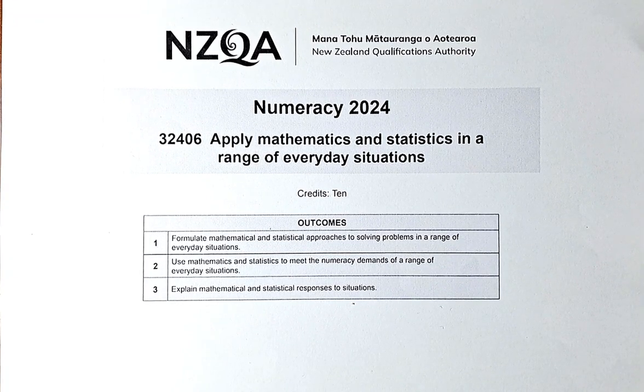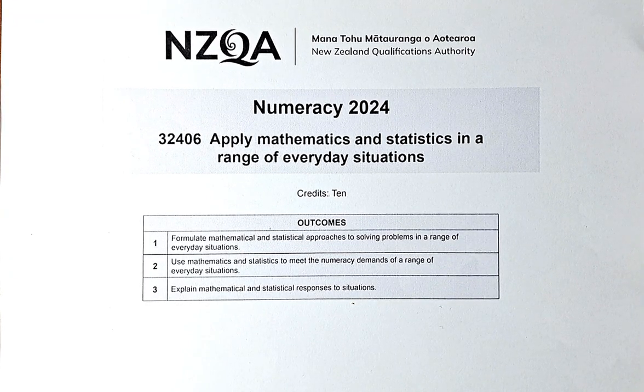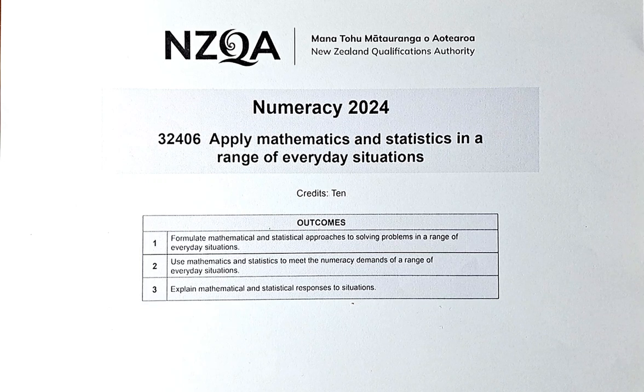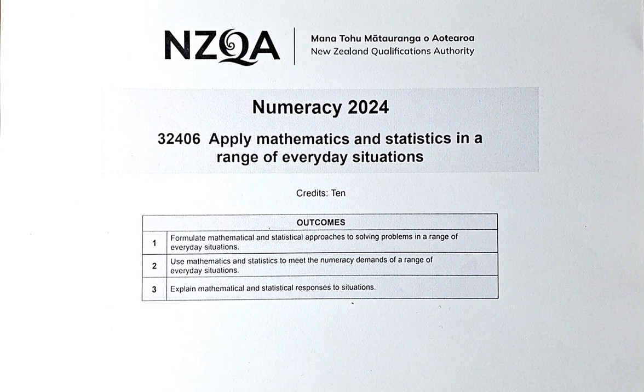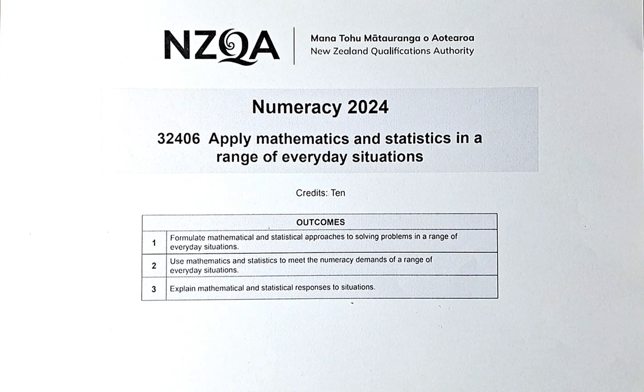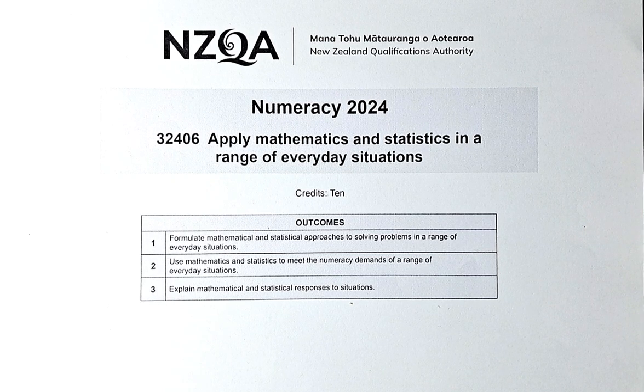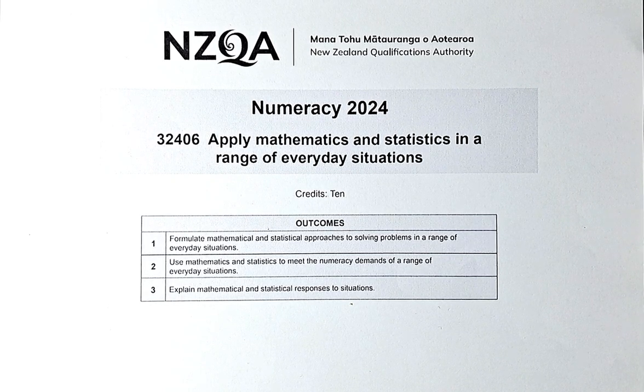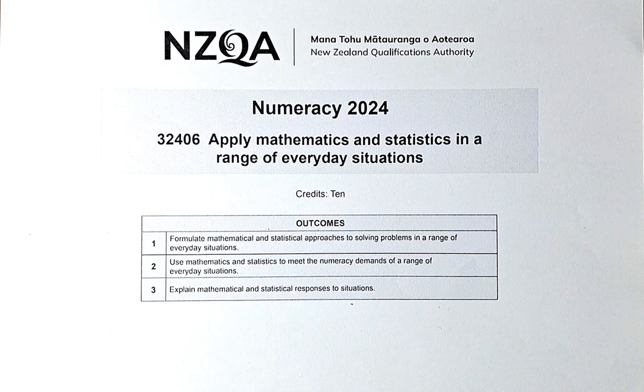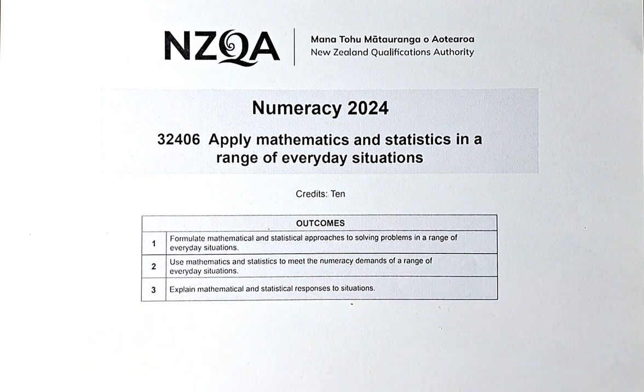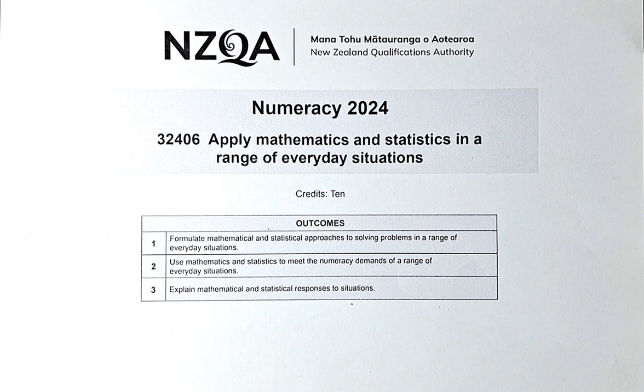Good day! This is video number three of the 2024 June numeracy paper. The title of this paper is Apply Maths and Stats in a Range of Everyday Situations. The paper number is 32406. As you know by now, you need to get a certain number of Outcome 1, Outcome 2, and Outcome 3 to be able to get achieved in this paper.